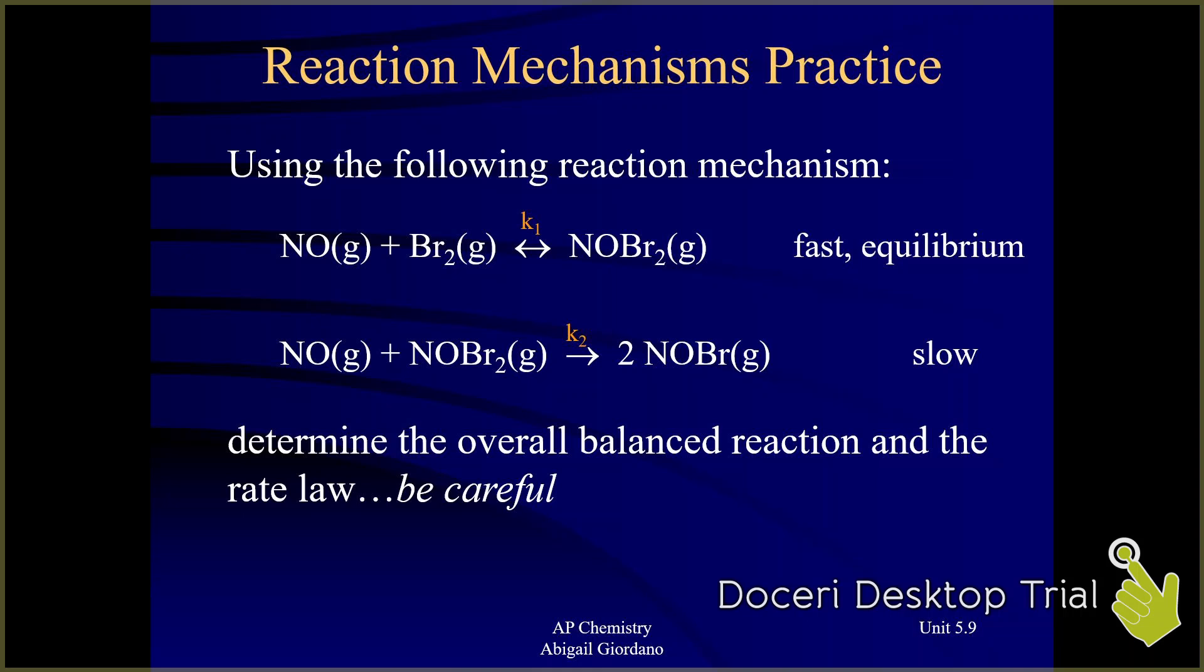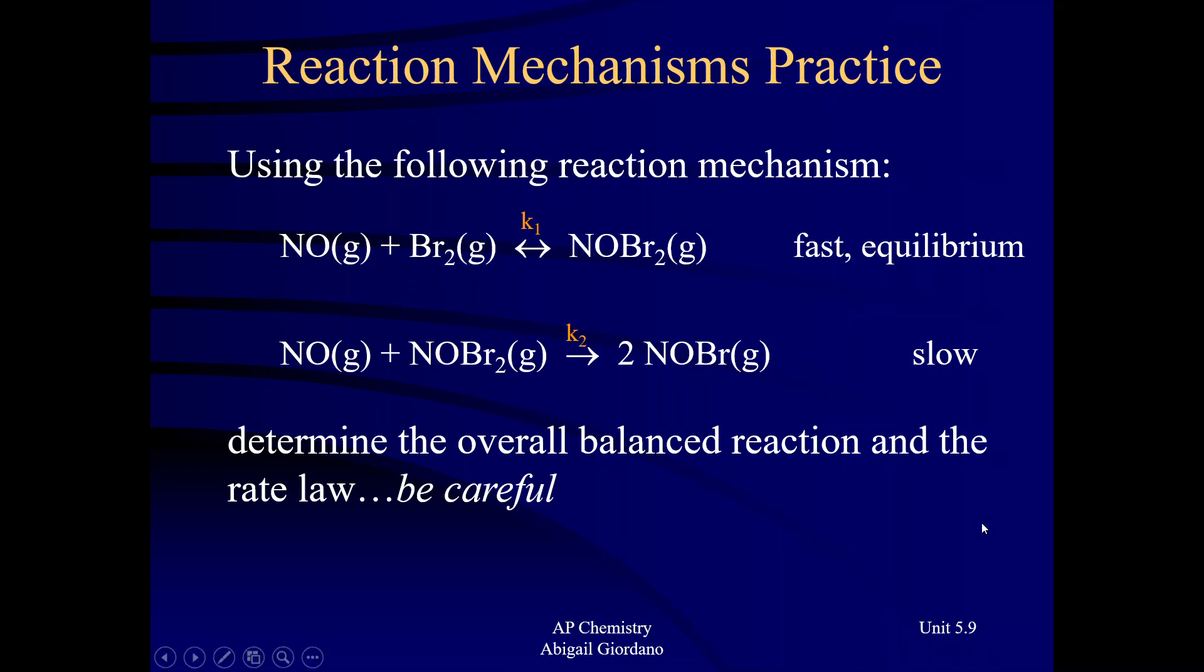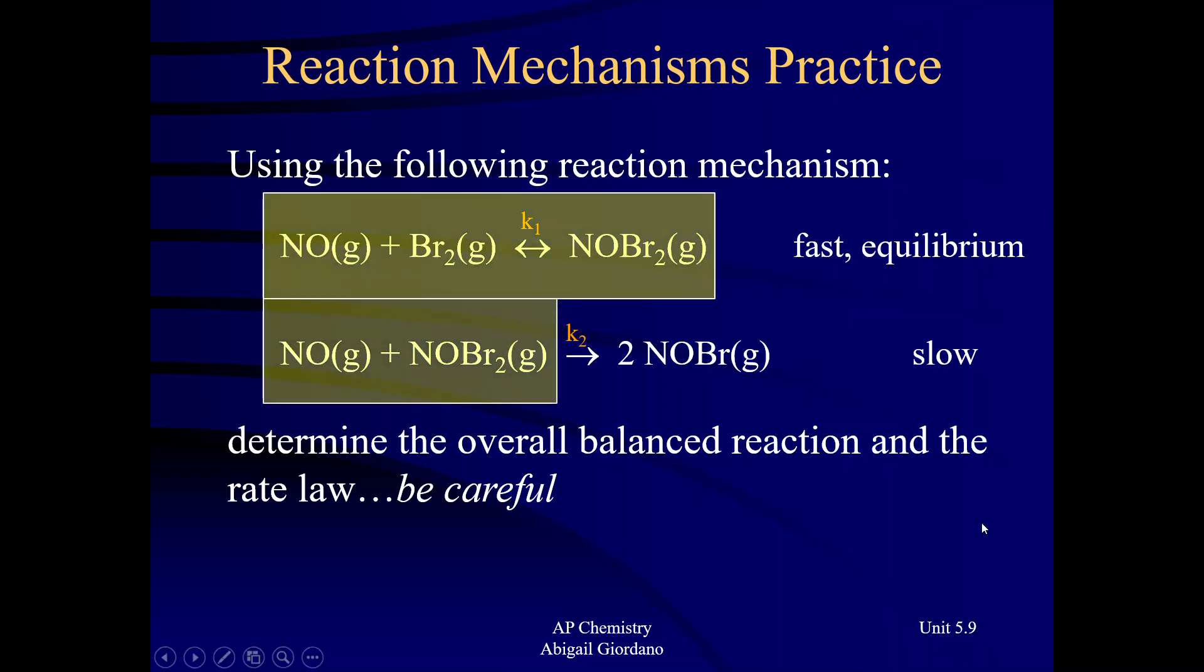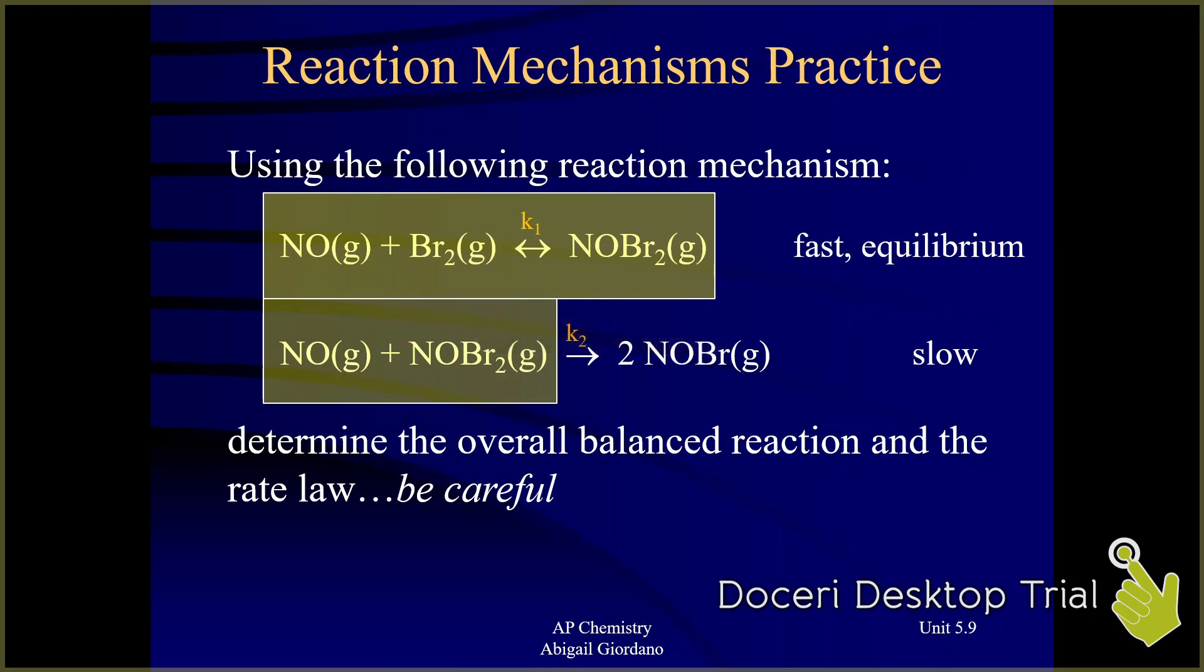what I do is I draw a box around the reactants of that slow step and anything above it. So let me show you. I'm going to draw a shaded box around the reactants of the slow step and anything above it, meaning any elementary step in its entirety, I'm going to include in that shaded box. Okay, now what? Well, now that I've boxed out what I want, I'm going to look in that shaded region and see, is there anything that I can cancel out?